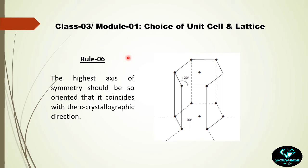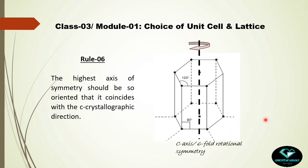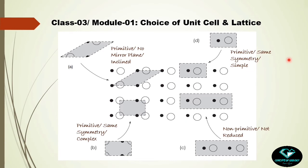Rule 6 is more a convention than a rule: the highest axis of symmetry should be oriented so that it coincides with the c crystallographic direction of the crystal. For example, a crystal with six identical faces has a six-fold rotational axis along its vertical center — the best unit cell choice aligns the c crystallographic direction with this six-fold rotational symmetry axis. We should keep this in our background knowledge.